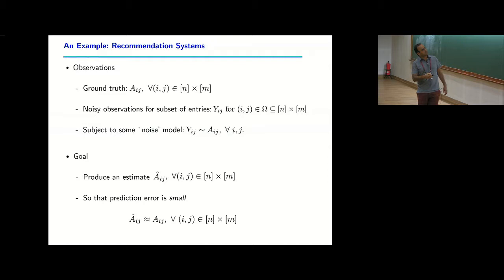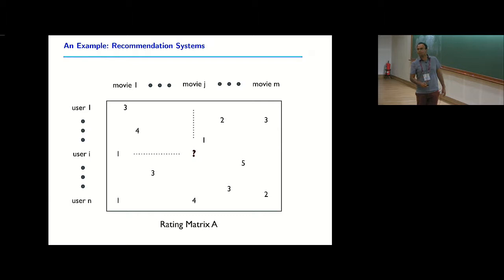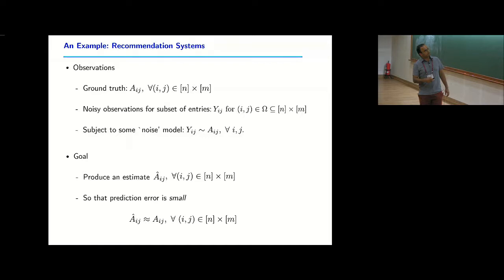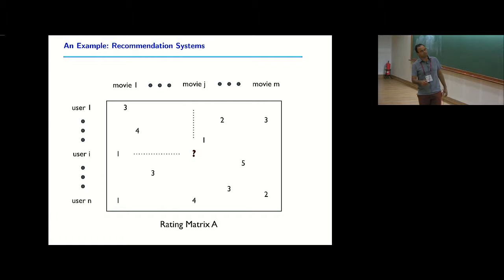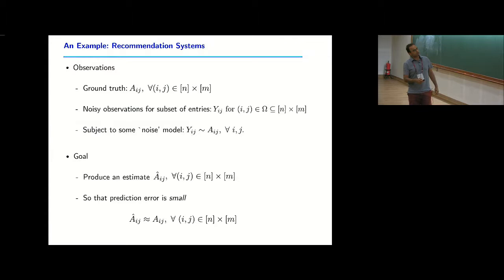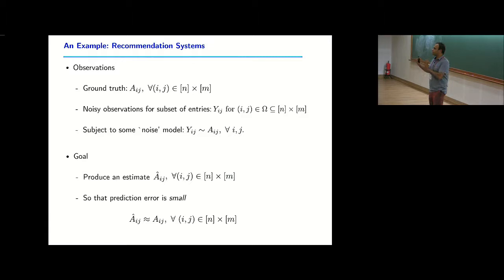Summarizing: we have some ground truth matrix A — an underlying matrix we're not observing that we want to learn. We observe noisy versions of this matrix for a small set of entries. These observed entries need not be actual values — your real rating might be 3.75 but you give four or three. There's some noise model relating partial observations to the underlying ground truth, and from those Y's we want to produce an estimate A-hat so that A-hat is as close to A as possible.